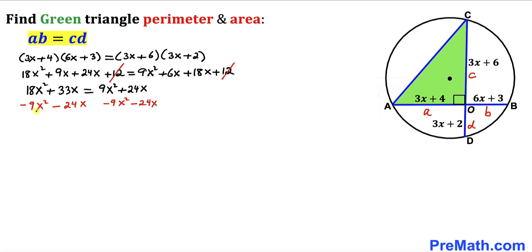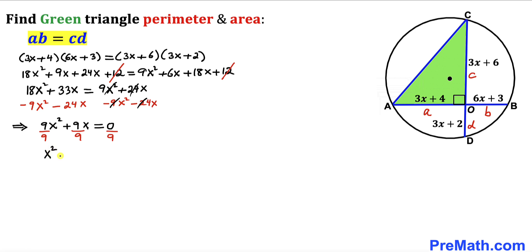We subtract 9x² and 24x from both sides. On the left-hand side this gives us 9x, and on the right they cancel out to 0. This equation is divisible by 9, so dividing through by 9 gives us the quadratic equation x² + x = 0. Since x is common, we factor: x(x + 1) = 0.